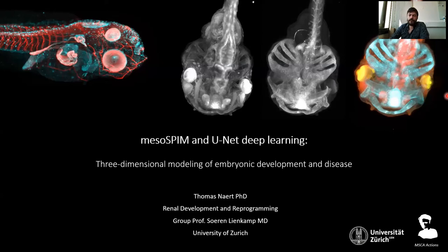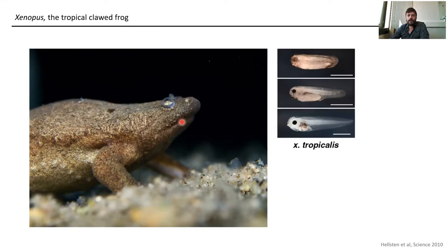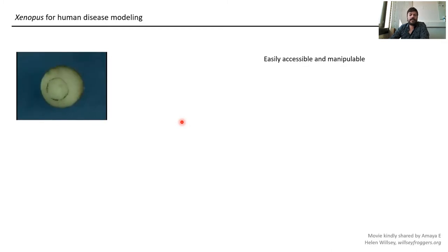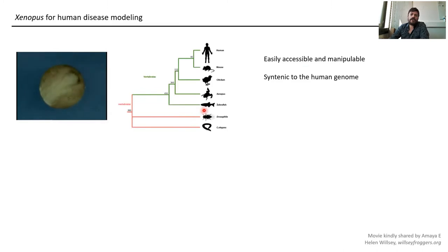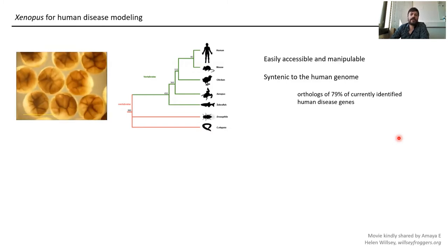We work with frogs — our favorite animal model organism. It's an obligate aquatic model organism with free-swimming larval stages. Frogs are very well positioned for human disease modeling: they have external embryonic development, making embryos easily accessible and manipulable. They sit on the evolutionary ladder somewhere between zebrafish and mouse relative to humans, and their genome is quite syntenic to the human genome. For 79% of currently identified human disease genes, there is in fact an ortholog in Xenopus.